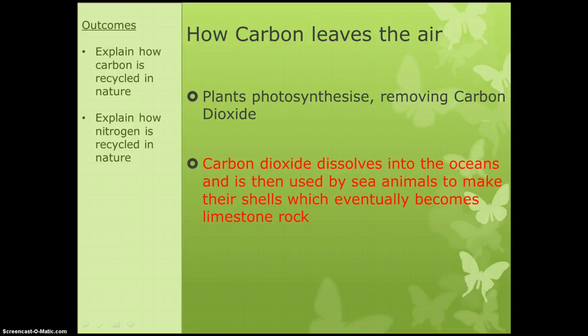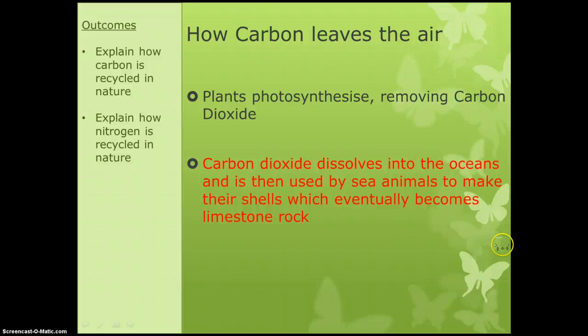The key points you need: plants photosynthesise, which removes carbon dioxide from the atmosphere. The other way that carbon can leave the air is that it can get dissolved into oceans and is then used by sea animals to make their shells, which eventually become limestone rock. The part in red is just for those doing the higher paper.